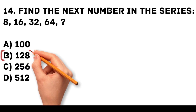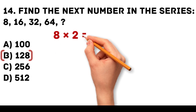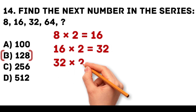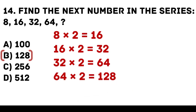Answer: B. 128. Each number in the series is multiplied by 2. 8 times 2 is equal to 16. 16 times 2 is equal to 32. 32 times 2 is equal to 64. 64 times 2 is equal to 128.